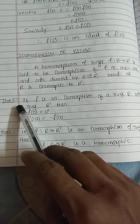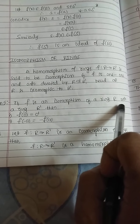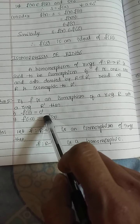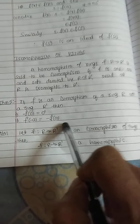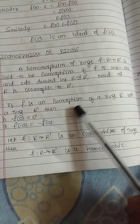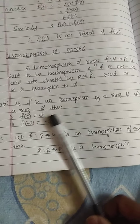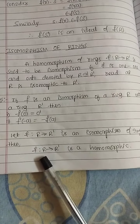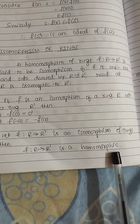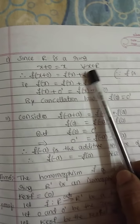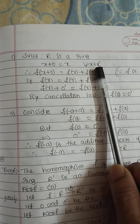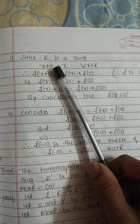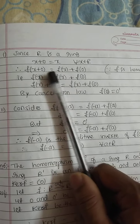Theorem number 5: If F is an isomorphism of a ring R onto a ring R', then F(0) equals 0' and F(minus A) equals minus F(A). Here it is given that F is an isomorphism of ring R onto R'. Since isomorphism is also a homomorphism, F maps from R to R' is a homomorphism. First: since R is a ring, x plus 0 equals x for every x belonging to R, where 0 is the additive identity. Applying F: F(x plus 0) equals F(x) plus F(0) because F is a homomorphism.